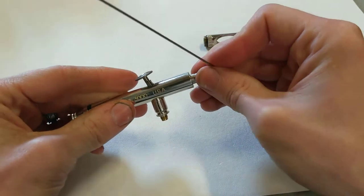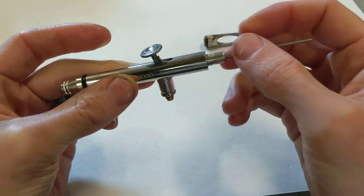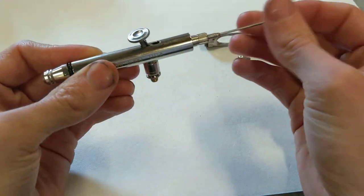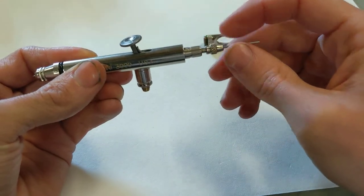Once you have that tightened down in place, put this needle through, through the back, through the assembly, all the way to the front of the airbrush. And it's going to be loose. That's fine. Put your chuck nut on. This chuck nut is what tightens the needle down.